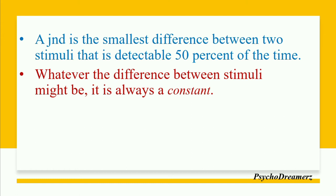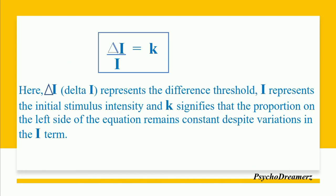If we want to know that there is a difference in taste, and a person starts with 10 teaspoons of sugar, it would take 2 additional teaspoons to notice the difference. That difference in taste is always a constant 20%. This same proportional rule applies to all other senses. The equation is delta-i upon i equals k.